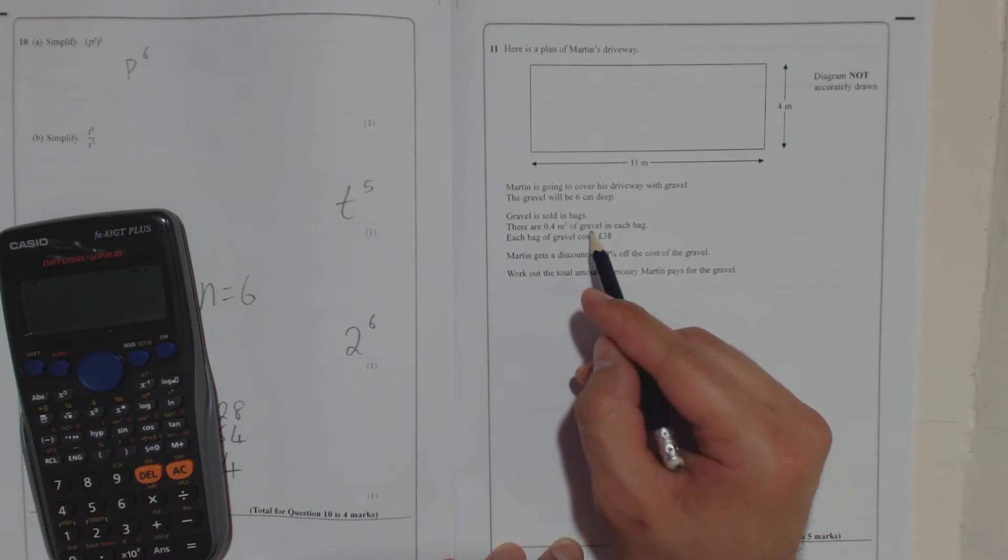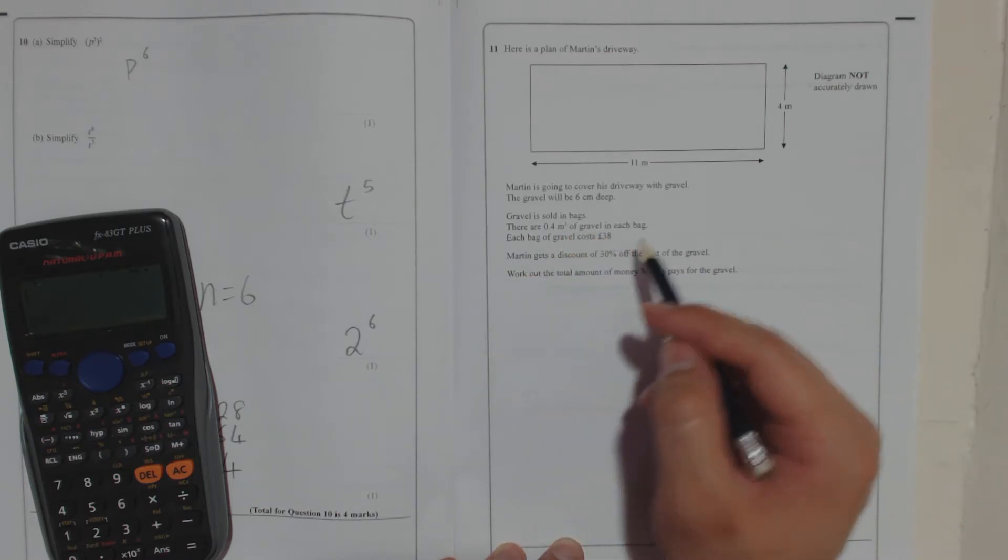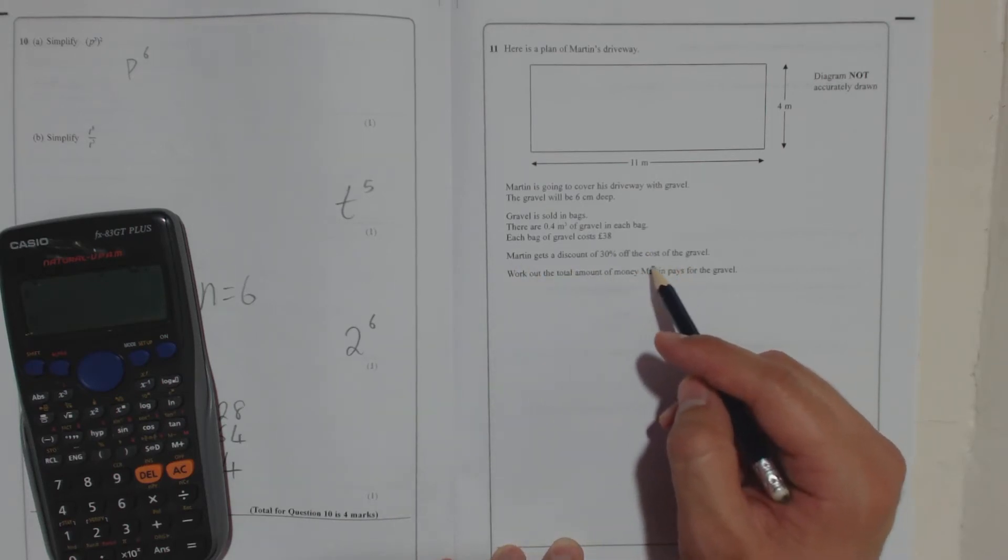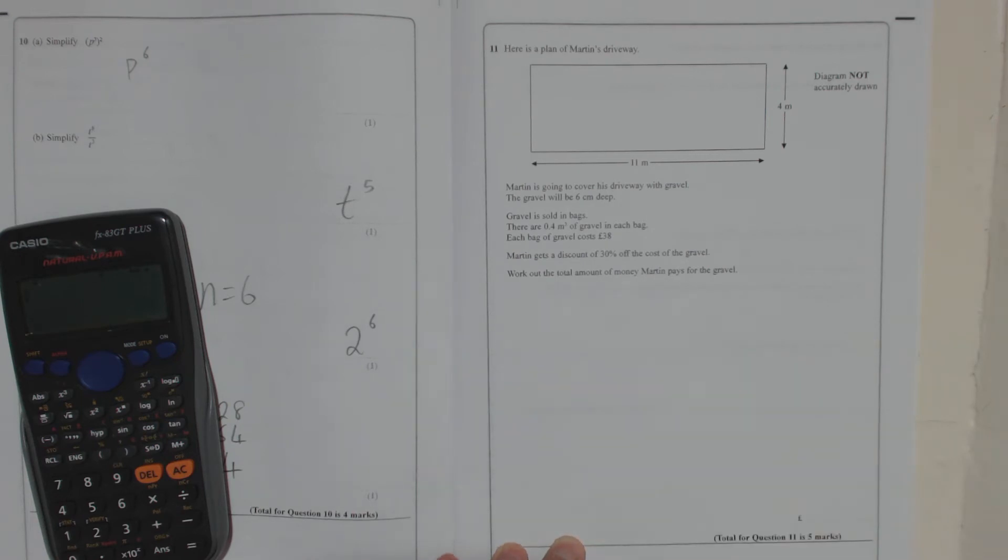There are 0.4 metres cubed of gravel in each bag. Each bag of gravel costs £38. Martin gets a discount of 30% off the cost of the gravel. Work out the total amount of money Martin pays for the gravel.